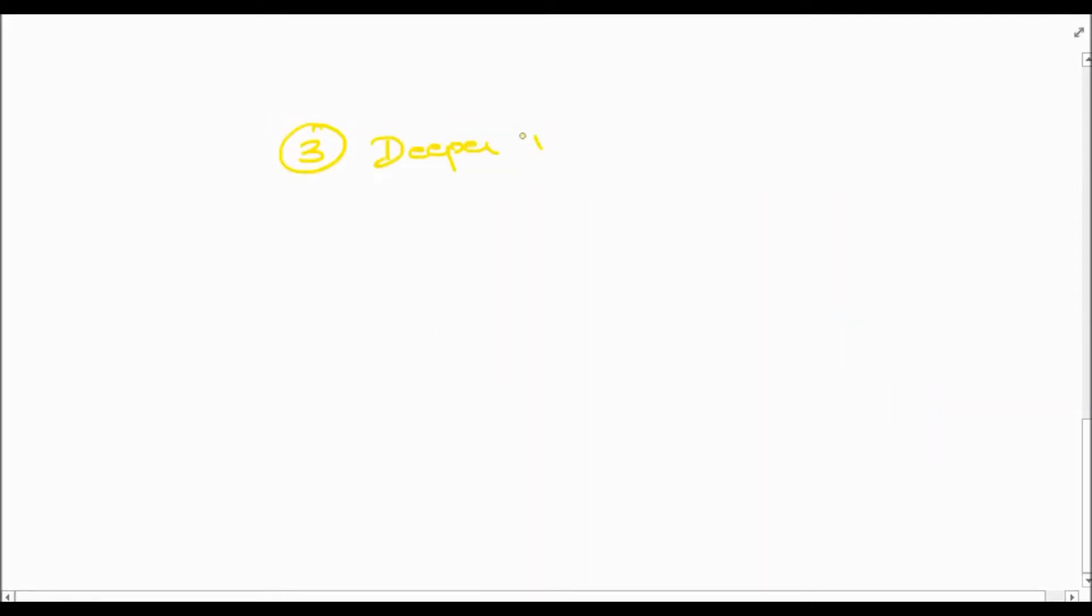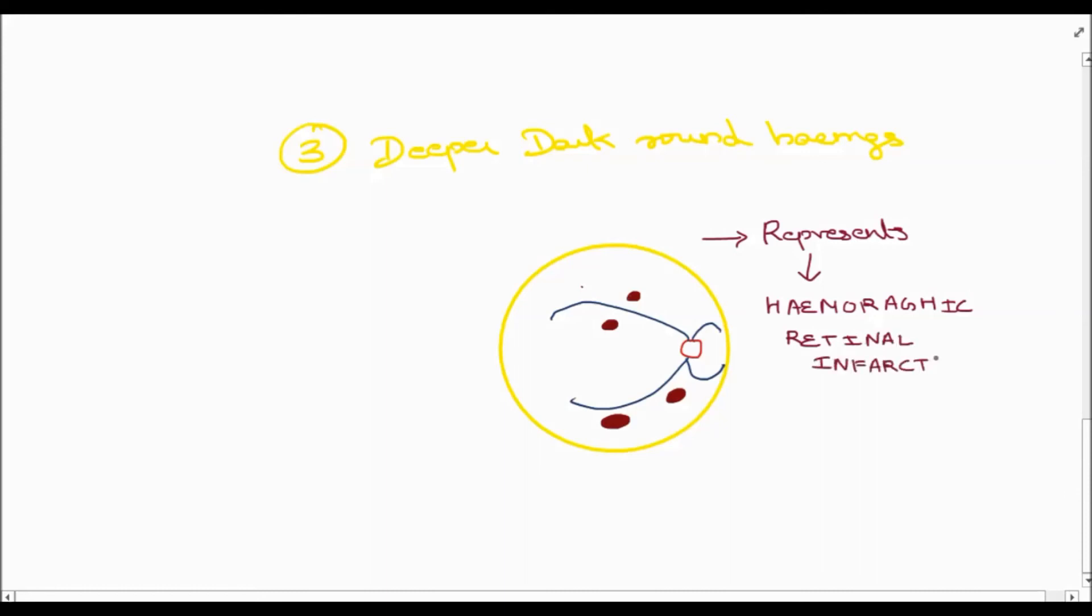The third is called deeper dark retinal hemorrhages. They are dark brown or red in color and fewer in number. They represent hemorrhagic retinal infarcts. They are located in the compact middle retinal layers.